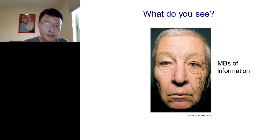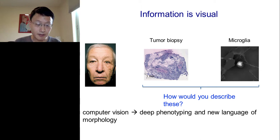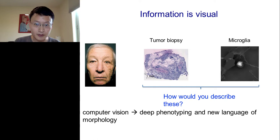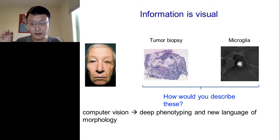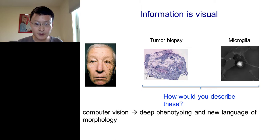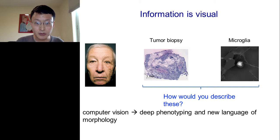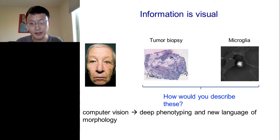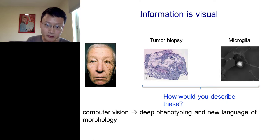This is the case even for images of humans or faces, something that we're quite familiar with. And the problem is even more stark if we're thinking about how to describe objects that are even smaller. Here I have an image of a tumor biopsy from a breast cancer tumor, and on the right we have an individual cell — the microglia, an immune cell. How would we even describe these objects? It's challenging because in English we really lack a very precise vocabulary to describe the phenotypes, morphologies, and dynamics of these objects.